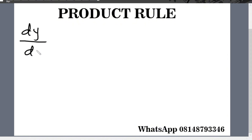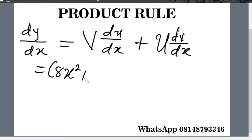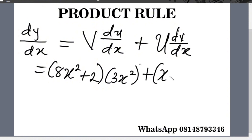Now let's substitute into the product rule formula. dy over dx equals v du/dx plus u dv/dx. Substituting, we have: (8x squared plus 2) multiplied by 3x squared, plus (x cubed plus 4) multiplied by 16x.